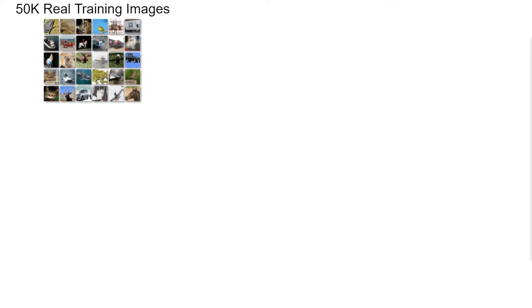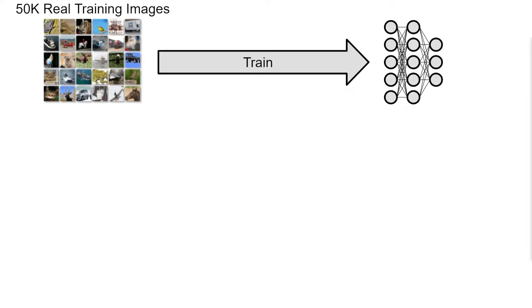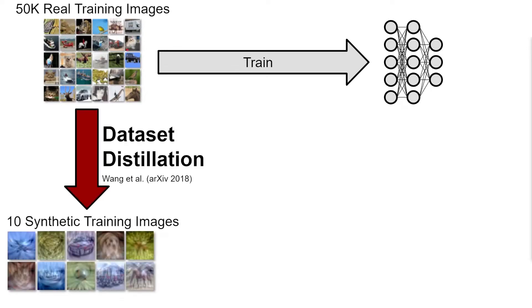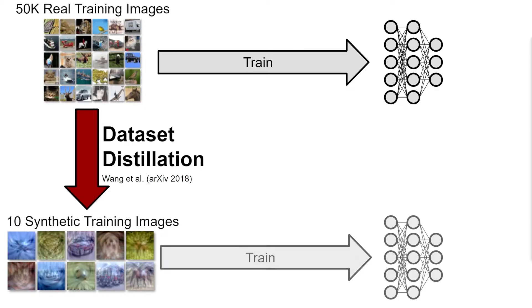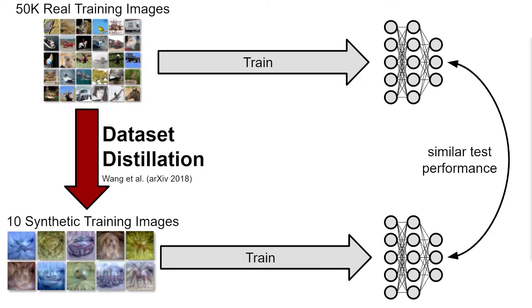This exactly describes the task of dataset distillation. Rather than training a model on the largely redundant real dataset, Wang et al. originally proposed to instead distill the dataset into a much smaller collection of synthetic images, such that a model trained on this synthetic set will have similar test performance to a model trained on the full dataset.